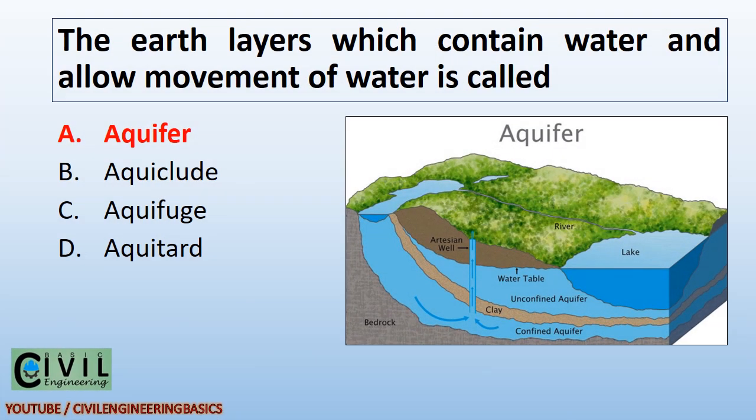The earth layer which contains water and allows movement of water is called an aquifer.